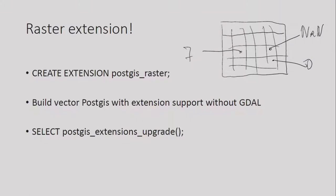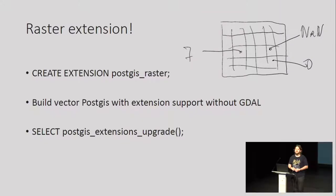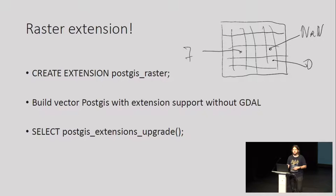Also, if you need to re-project your data and still want to use the fast copy mode, there's a switch for that. The biggest thing for maintainability is that we split the raster into a separate extension — raster is now called PostGIS Raster. It can be created separately. If you want to build PostGIS for some old or strange system, you can build it without GDAL. That was a major reason why people didn't use the extension in 2.0. Now they can just leave out the raster extension.